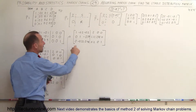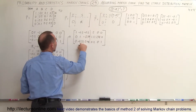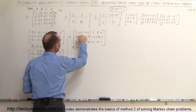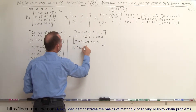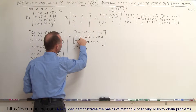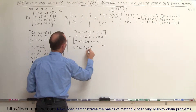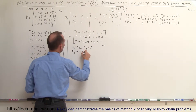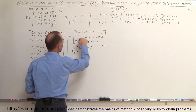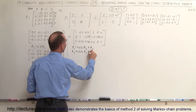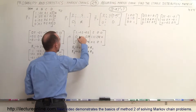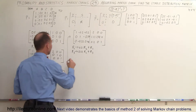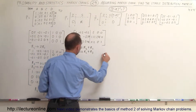Now the next job is to take the entries above and below the row 2 pivot and turn them into zeros. To do that we take the first row and replace it by 0.2 times the second row added to the first row. Then take the third row and replace it by 0.22 times the second row added to row 3. That will make those two entries go to zero, and of course we have to take care of everything else.